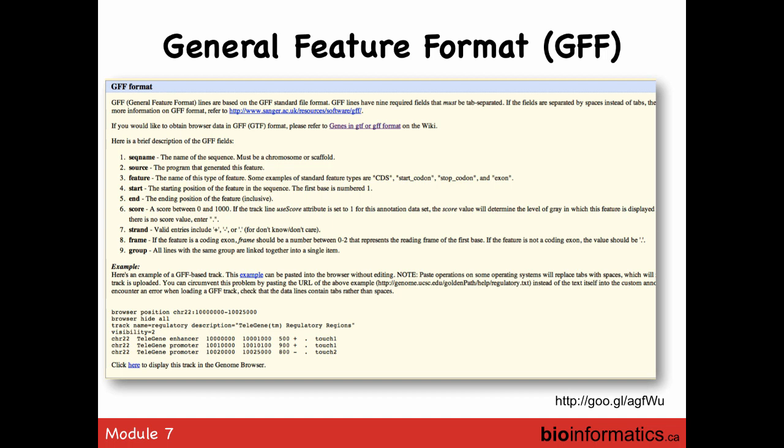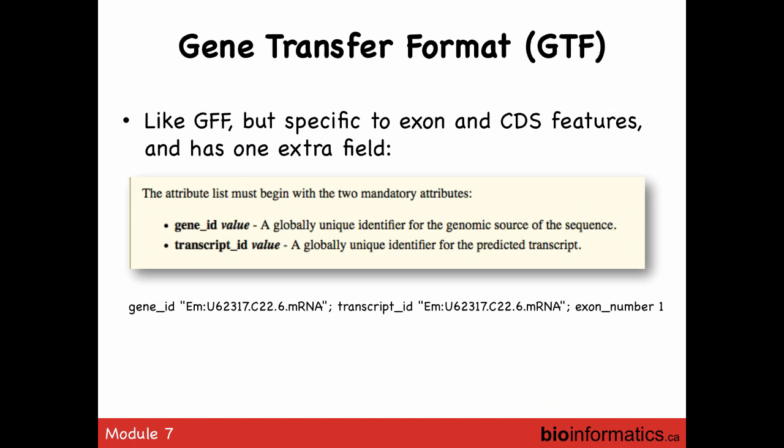GFF has all the standard fields: sequence name, source, feature, start, end, score, strand, frame, group — with specific versioning. GTF is basically a simplified GFF that only deals with coding sequence and gene features. It has an extra field for identifiers — for example, an Ensembl ID — as part of the GTF file format.